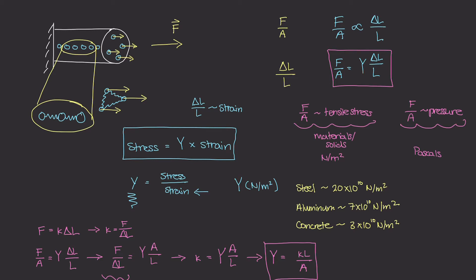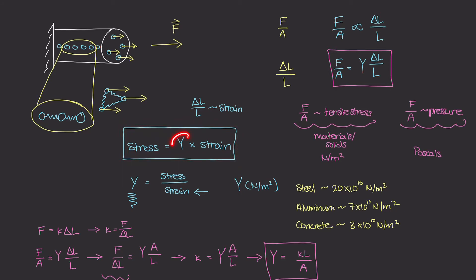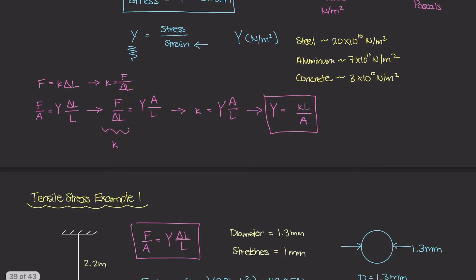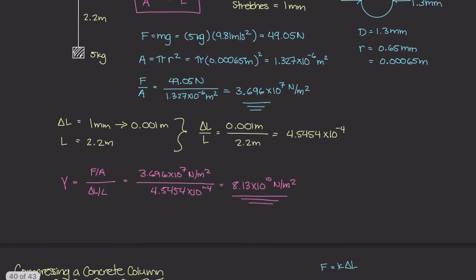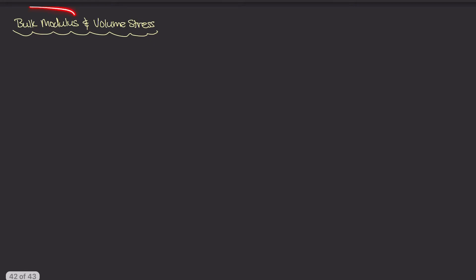The simplified version of that relationship is: stress equals Young's modulus times strain. Now in this video I want to talk about bulk modulus. It's similar to Young's modulus in that it establishes a relationship between some sort of stress and some sort of strain.